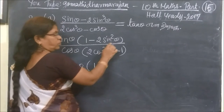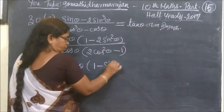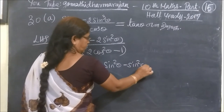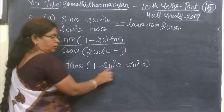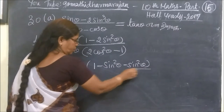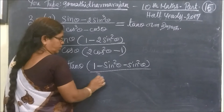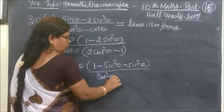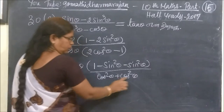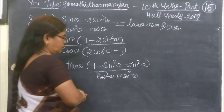Minus 2 sin squared theta. 4 sin squared theta minus sin squared theta. What happens here? Now this is minus 2 sin squared theta by 2 cos squared theta. Cos squared theta plus cos squared theta gives 2 cos squared theta.